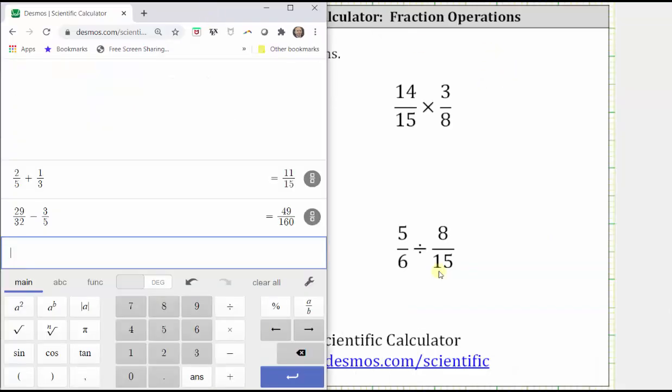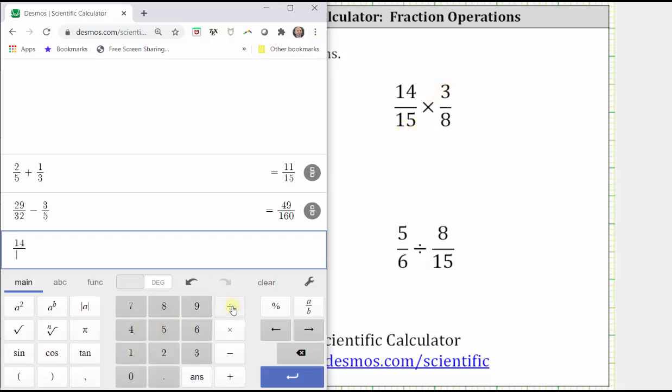Now let's find the product and the quotient. Next, we have 14/15 times 3/8. We enter 14 divided by 15, right arrow,